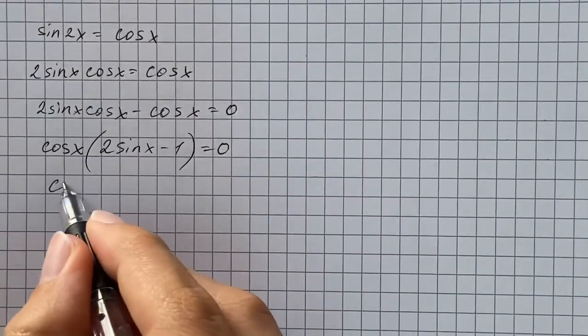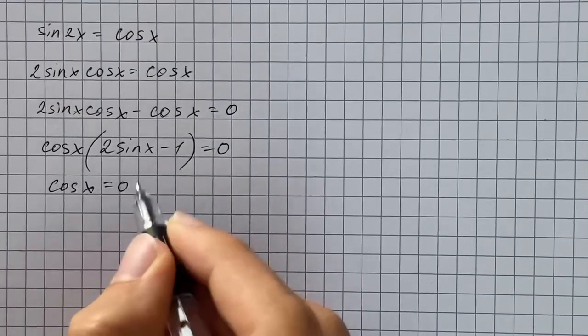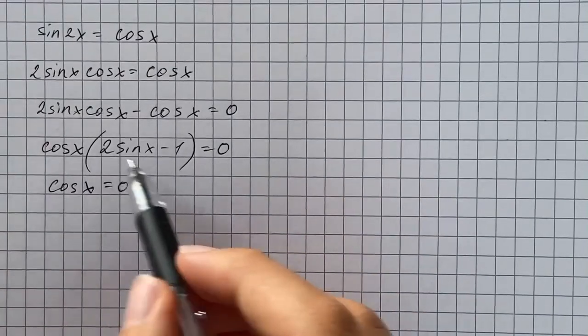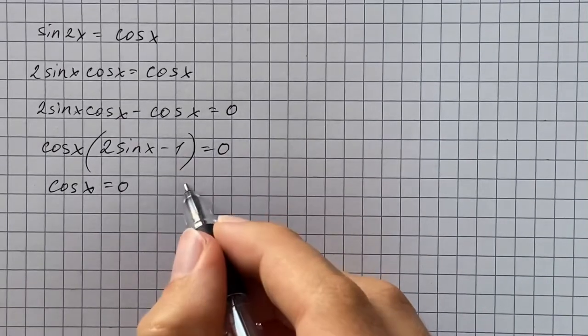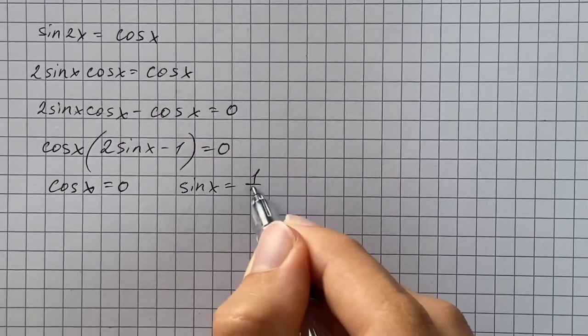So we set cosine of x equals 0 and the second factor equals 0. So here we're going to add one to both sides and divide by 2, and we get sine of x equals 1 half.